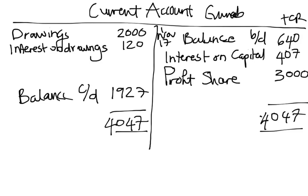In summary, the capital account reflects how much each partner has invested in the business, while the current account reflects how much the partner is earning through all the activities of the business. Thank you very much.